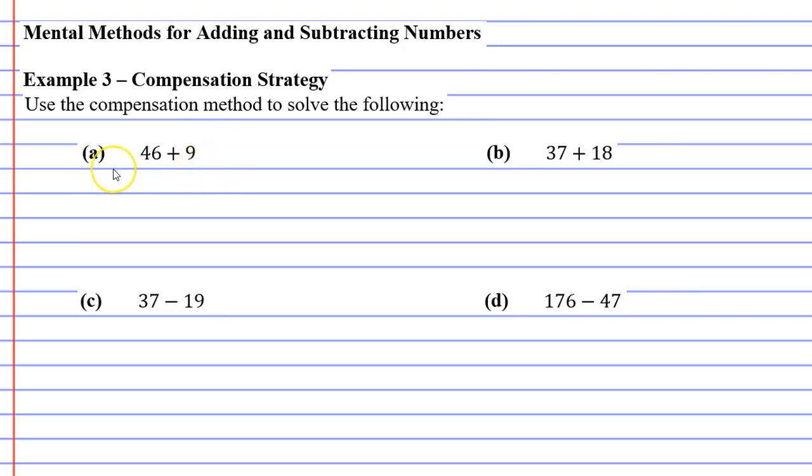For question A we've got 46 plus 9, which is a little difficult to do in your head. What we do is change the 9 and make it 10, and the reason we're doing this is it's a lot easier to add 10 than 9. Now you can't just go ahead and change numbers, but the reason we can do this is we're going to put a minus 1 at the end of it because 10 minus 1 is the same as 9.